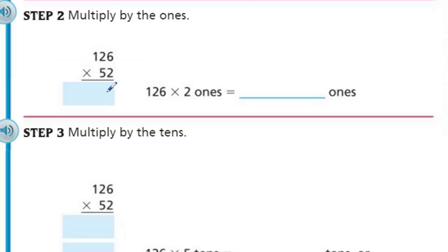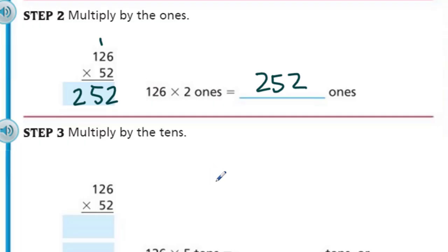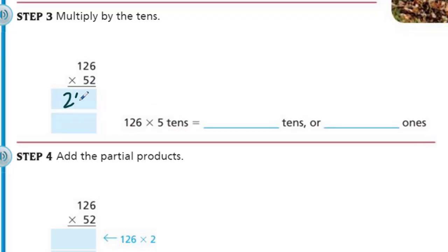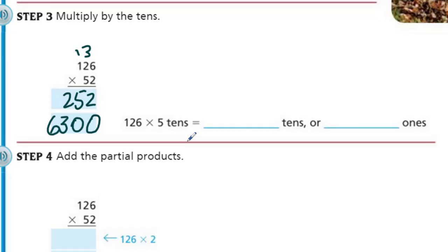Step two says multiply the ones. 2 times 6 is 12, carry that 1. 2 times 2 is 4, plus 1 is 5. And 2 times 1 is 2. So I actually have 252 ones when I multiply the ones digit by each of those place values. Now we move into the tens. We put in our 252 and I need the placeholder zero. I have 5 times 6 is 30, carry the 3. 5 times 2 is 10 plus 3 is 13, carry the 1. 5 plus 1 is 6. So I have 6,300.